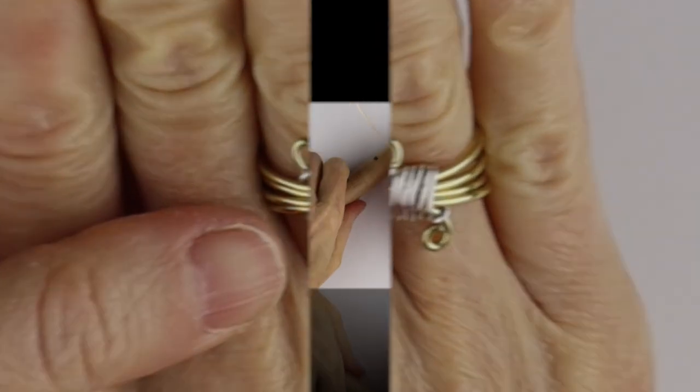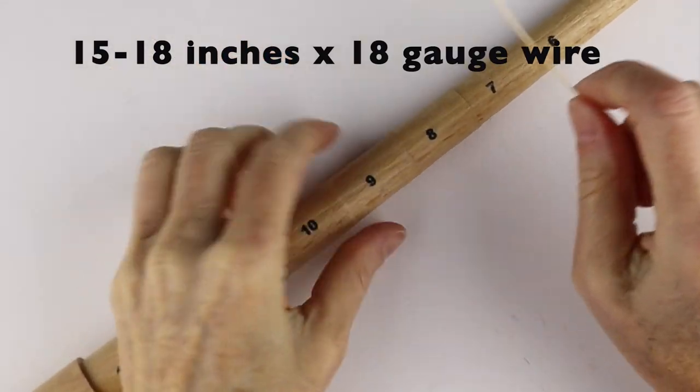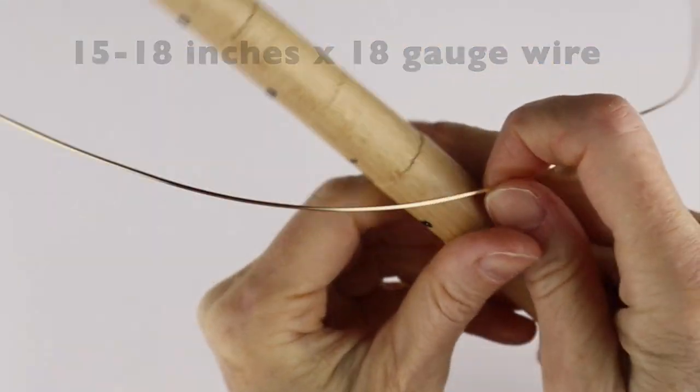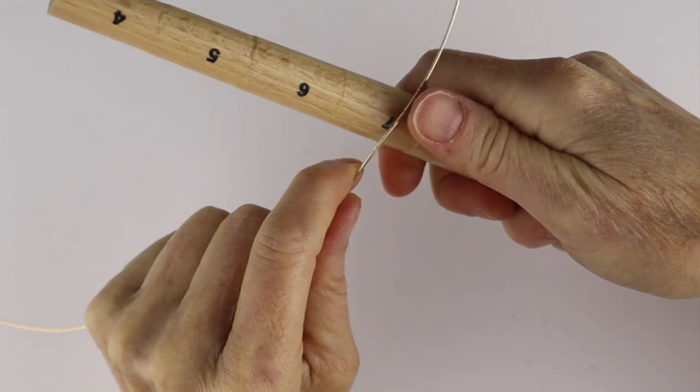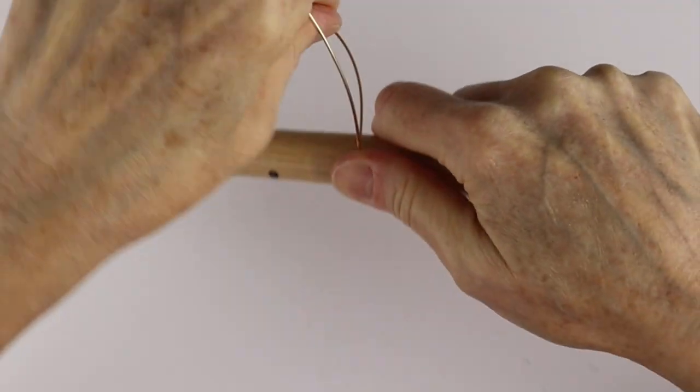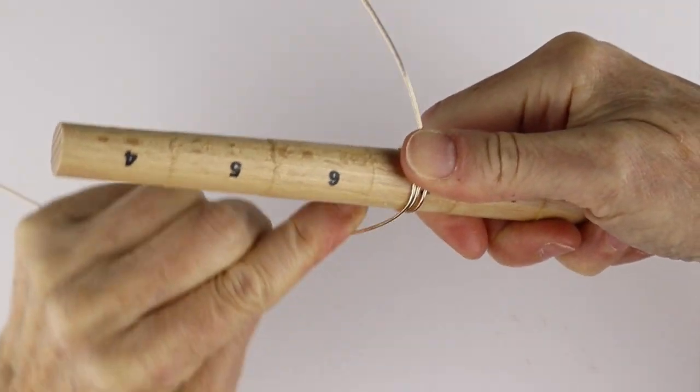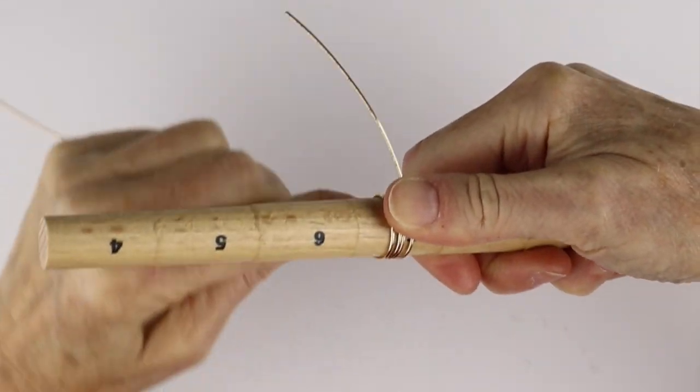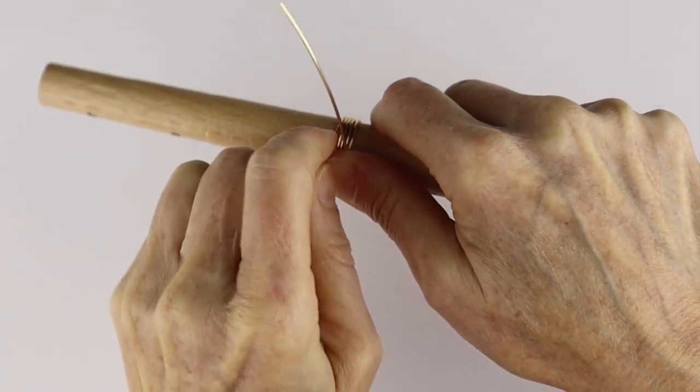The 18 gauge is much easier to work with, so we'll just take it and wind it around the mandrel. Hold it with your thumb and then just bring it around a few times depending on how wide you want the ring to be. We're just going to go around a few times.